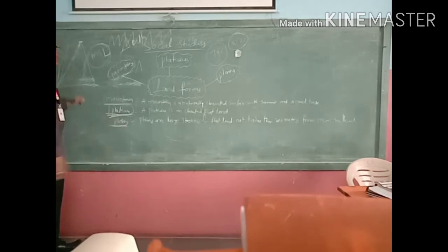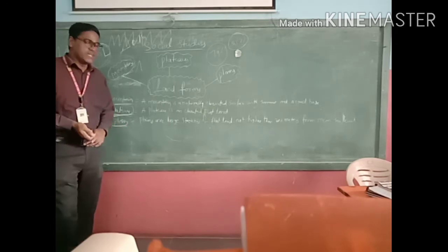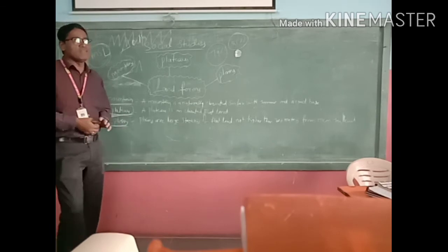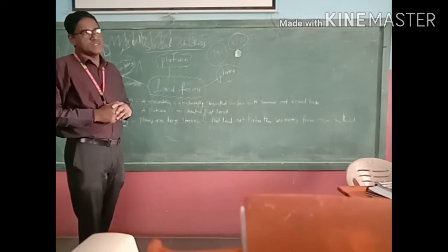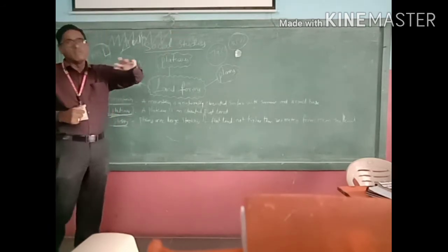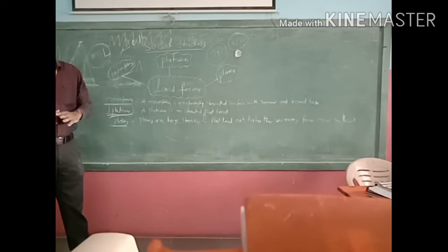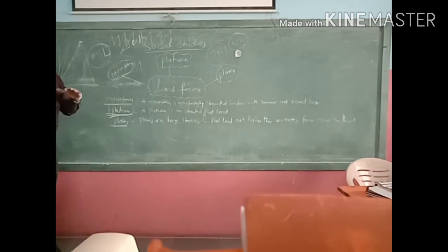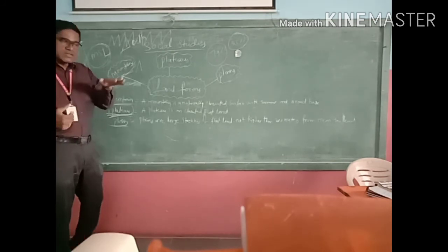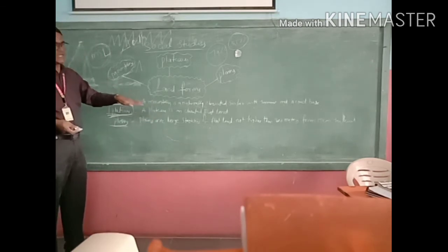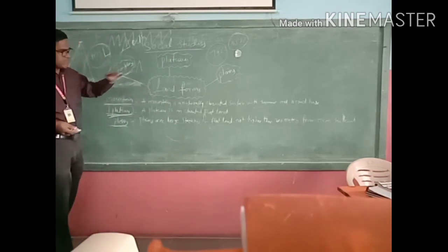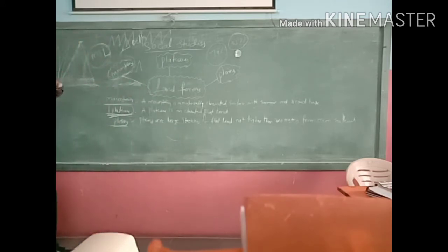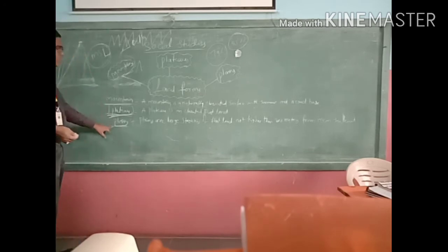Next one is plain area. Plain areas you know very well — take a cricket ground as a general example. The surface is equal, no up and down. The height from the sea level is up to 200 meters. The surface is flat and smooth with no up and down. That area, that landform, we call a plain area.